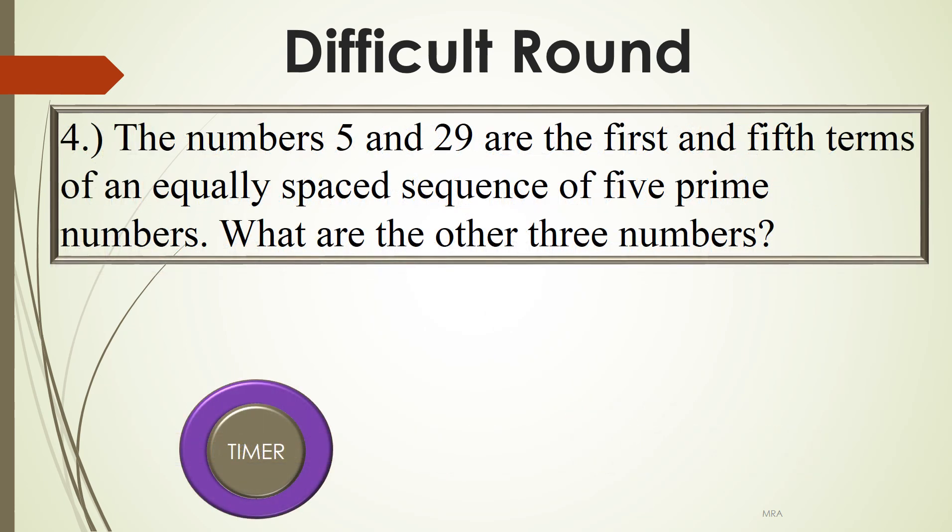Question 4: The numbers 5 and 29 are the first and fifth terms of an equally spaced sequence of five prime numbers. What are the other three numbers? Go.